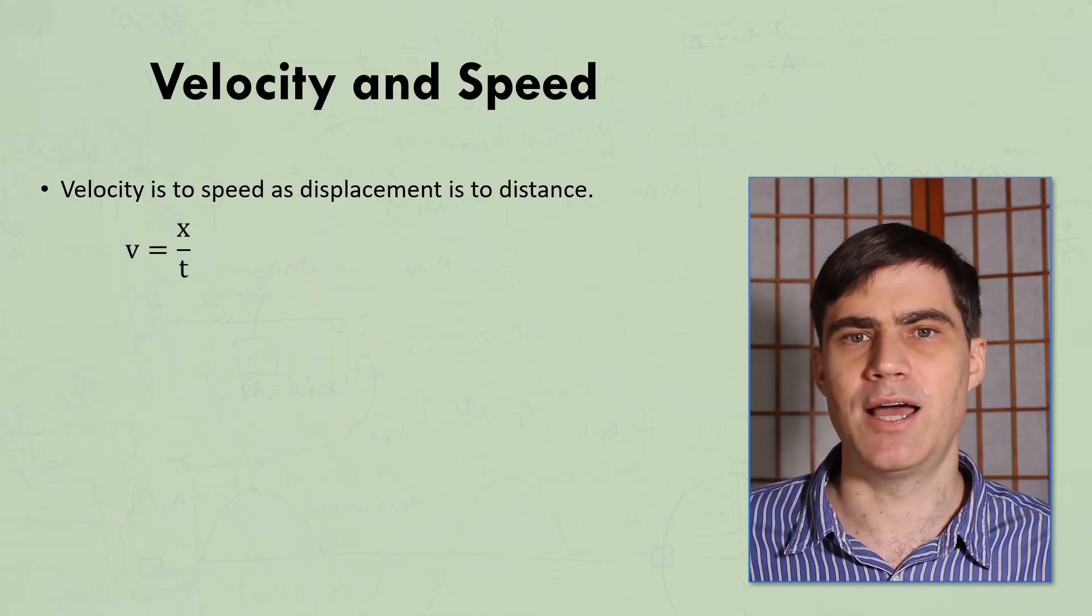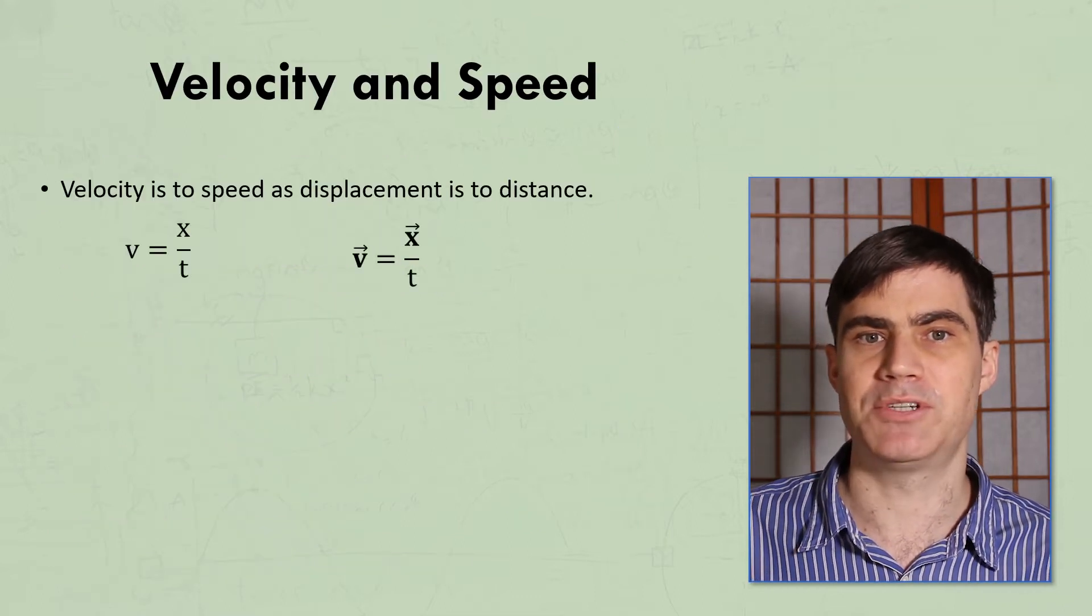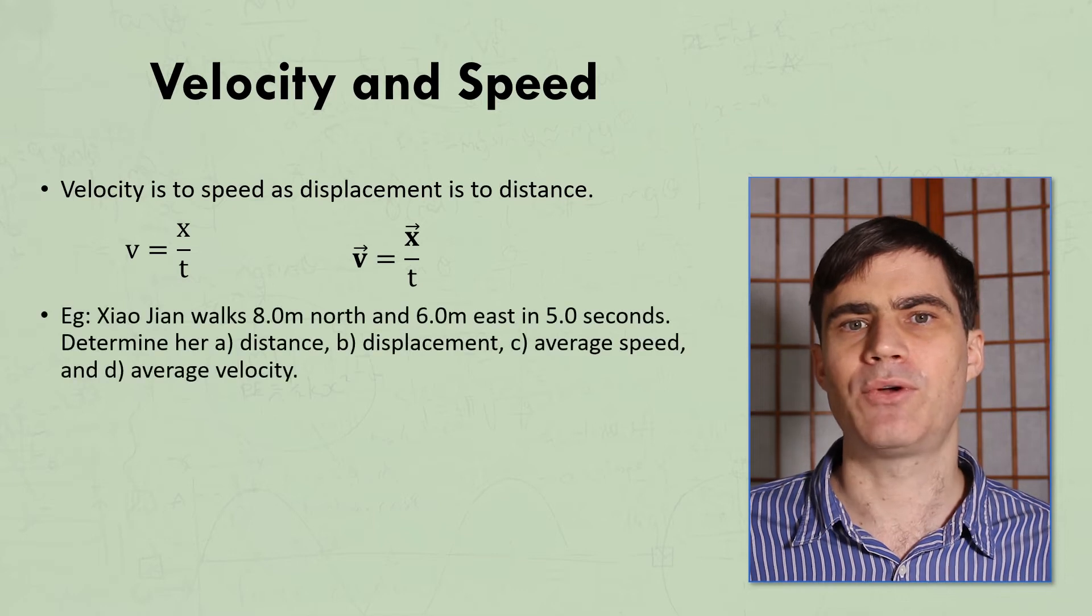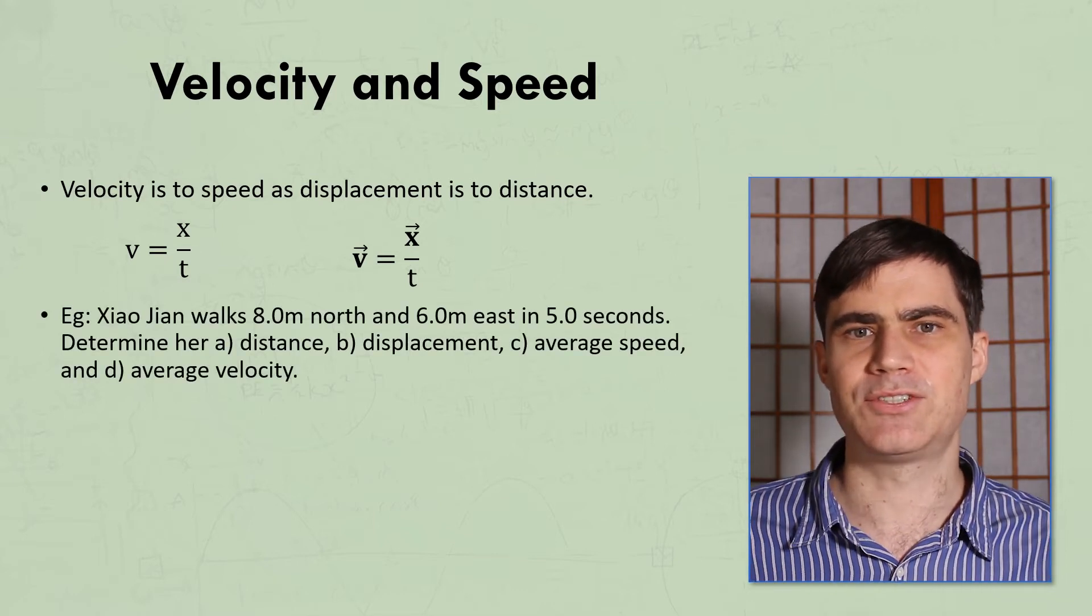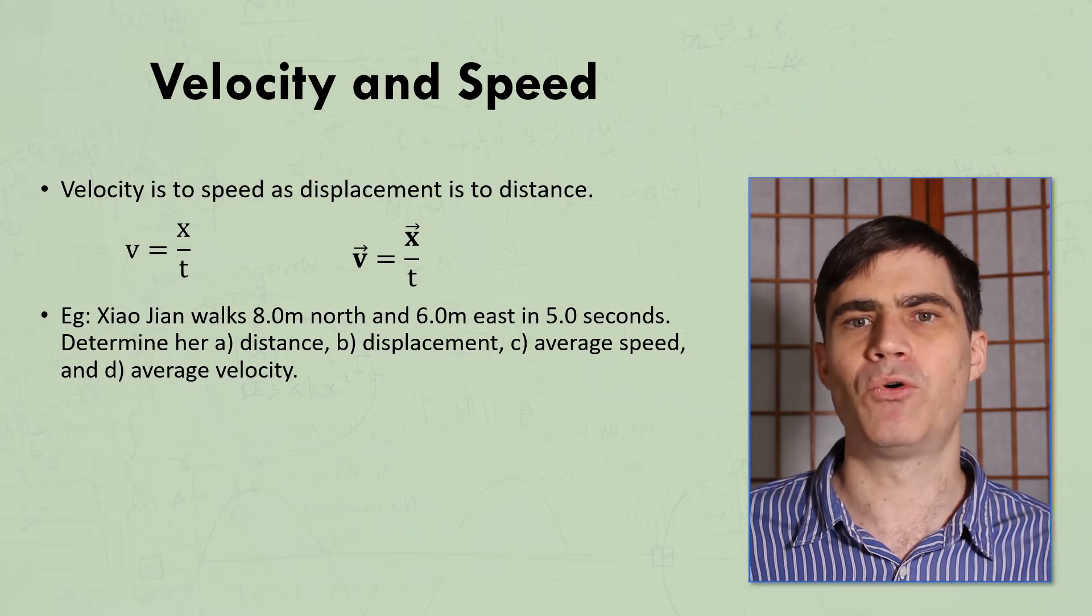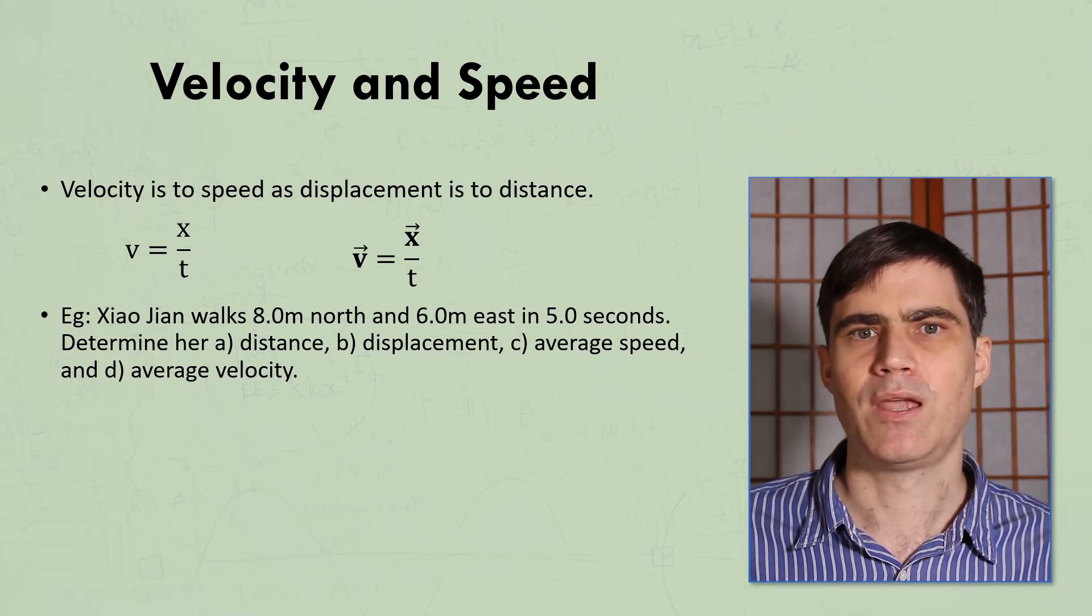While speed equals distance over time, velocity equals displacement over time. So now let's look at an example which uses angles. Xiao Jian walks 8 m north and 6 m east. And we need to find all four quantities we've talked about here.